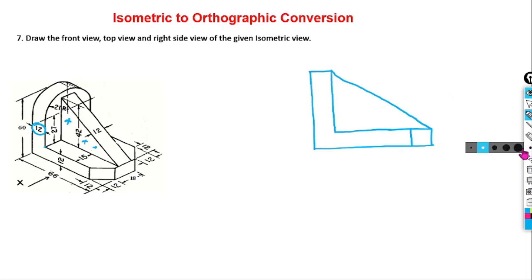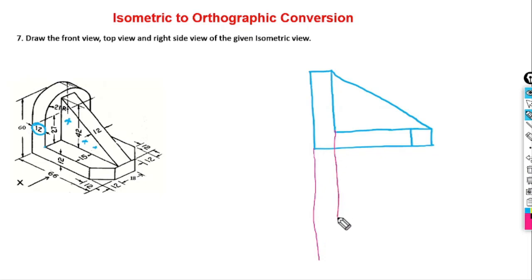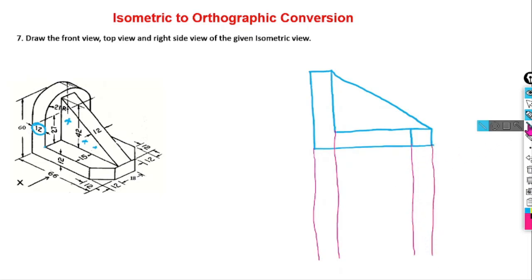This is a very simple problem. Before drawing the top view or side view, what we need to do first is draw the projection lines. The projection lines help draw the top view, which has a semicircular block that becomes a rectangular block.